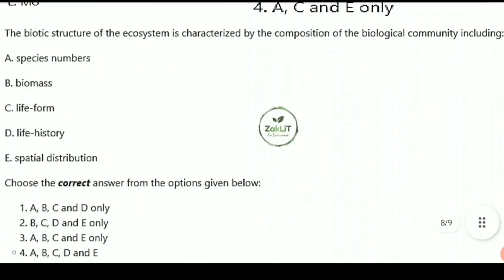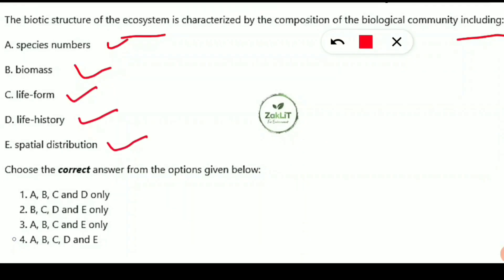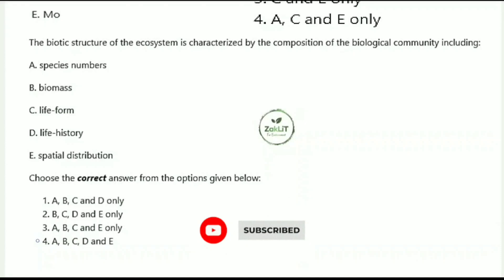The final question asks: the biotic structure of an ecosystem is characterized by the composition of the biological community, including what? The answer includes species number, biomass, life form, life history, and spatial distribution — all of these are important in characterizing the biotic structure of the ecosystem. All options are correct, so option 4 is the answer. Don't forget to subscribe to the Exactly channel for further updates. All the best for your preparation!